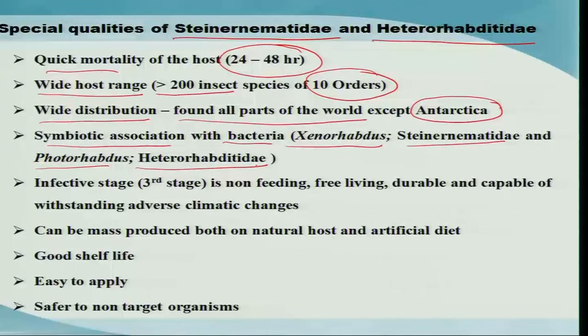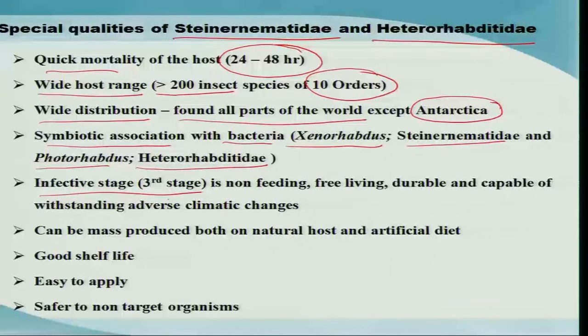In fact, it is the bacteria they carry that causes the death of the insect; the nematodes are simply the carriers of the bacteria. They have a third infective stage, called the infective juvenile, which is non-feeding, free-living, and durable, capable of withstanding adverse climatic changes. This is a great advantage, as this stage can freely live in the soil without food for several months and withstand adverse conditions. Only when a suitable host is encountered does it enter and kill the insect.